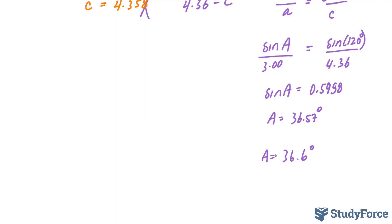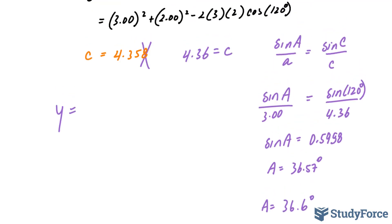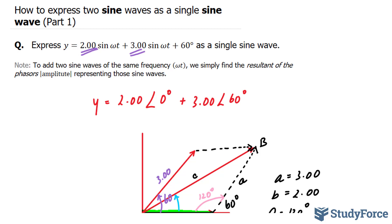So our final sine wave will look like this, where Y equals my amplitude of 4.36 sine with an angular velocity or frequency the same as we had originally, plus 36.6 degrees. That right there is the function written as a single sine wave. That is how to express two sine waves as a single sine wave. Make sure to watch part two, where we combine a sine wave and a cosine wave together.